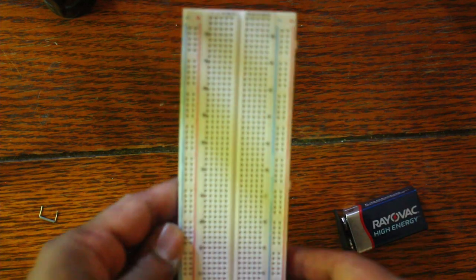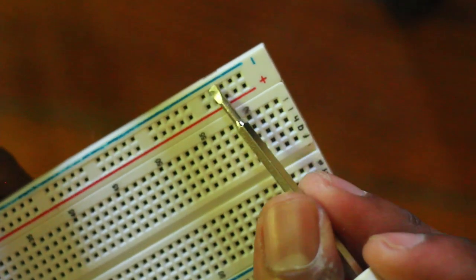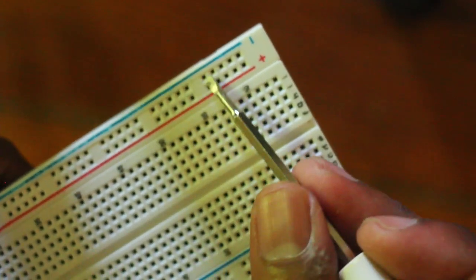This is a breadboard. It's gonna be our primary means of prototyping, so you can see here we got a negative rail, and in case you don't know how these work, there's these little slots here.